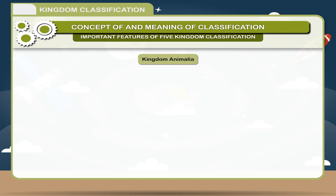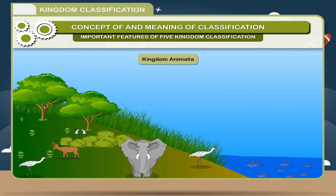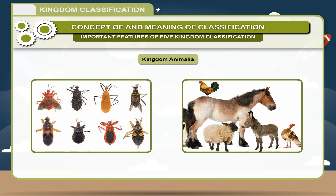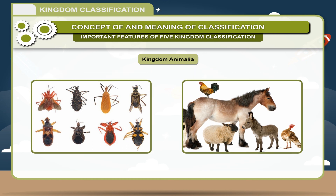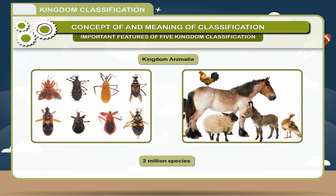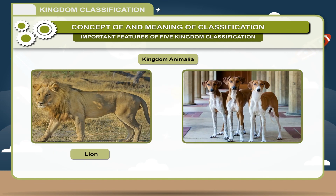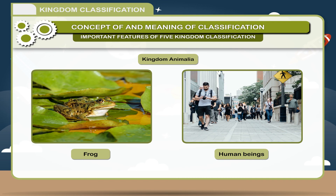Kingdom Animalia: All animals are multicellular. They are heterotrophs, that is, they cannot prepare their own food. Animals can move from one place to another with the help of nerves and muscles. Animals are classified into two major groups: invertebrates and vertebrates. Kingdom Animalia contains about 2 million species. Examples include earthworm, butterfly, lion, dog, fishes, frog, and human beings.